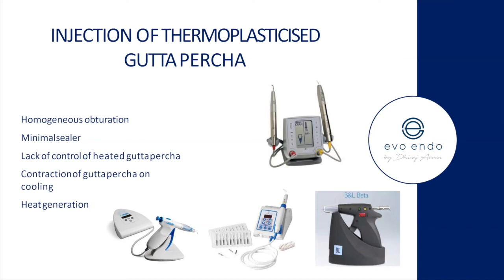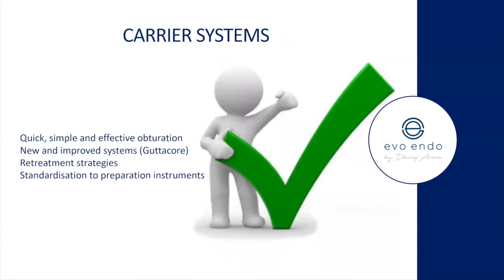Benefits of backfill: more homogeneous obturation with minimal need for sealer. However, there is a lack of control when using heated GP, so the benefit of creating an apical plug is always there. Remember GP contracts on cooling, so be efficient with how you work and don't hold heated instruments in the root canal system for too long.